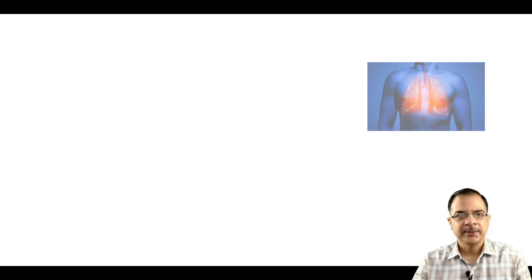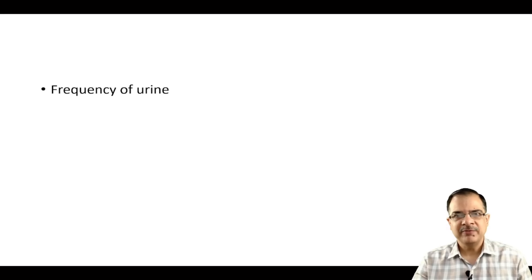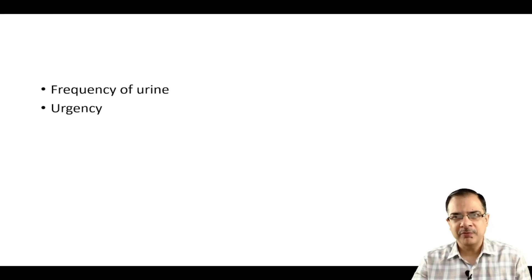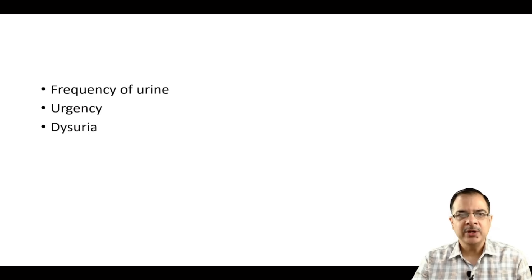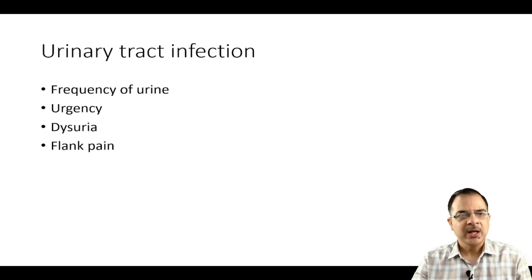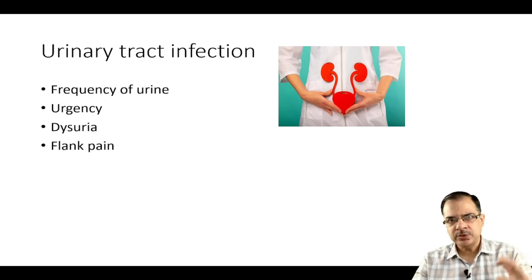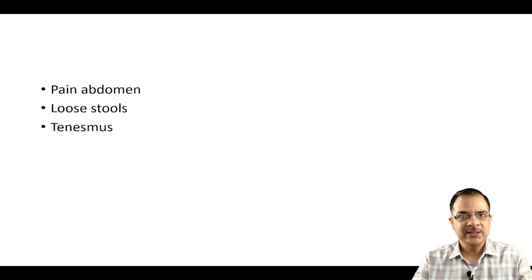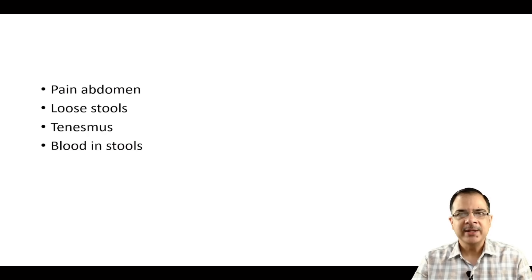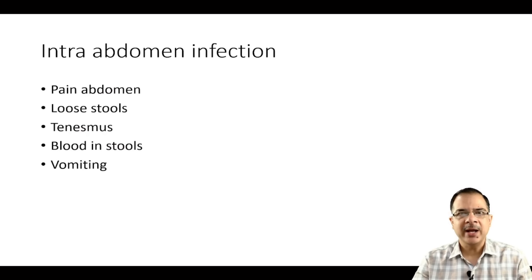Increased urinary frequency, nocturia, urgency (inability to hold urine), dysuria (pain or burning while passing urine), or flank pain at the renal angles — these are suggestive of urinary tract infection. Pain abdomen, loose stools, bleeding per rectum, tenesmus (increased urge to defecate with blood in stools), or vomiting are all suggestive of intra-abdominal infections.